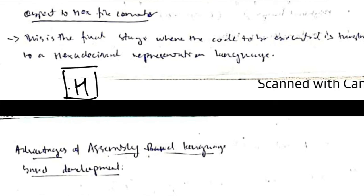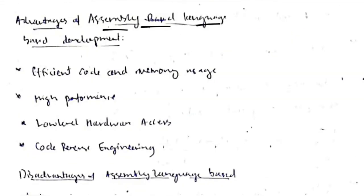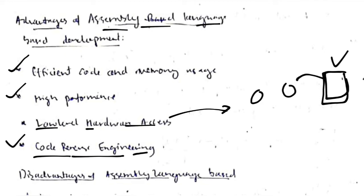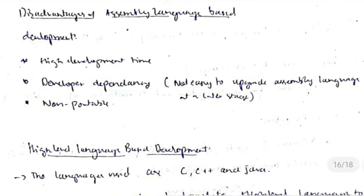After conversion to a hexadecimal file, the computer executes the code. Advantages of assembly language include efficiency, high performance, low-level hardware access, and support for code reverse engineering — the process of analyzing a finished product (e.g., a mobile phone) to understand how it was manufactured, which is the opposite of developing from scratch.